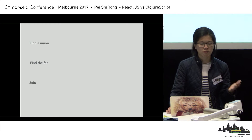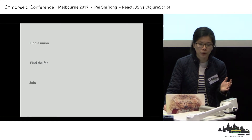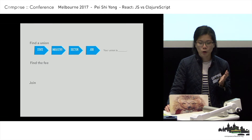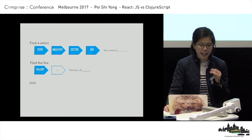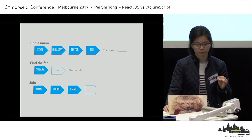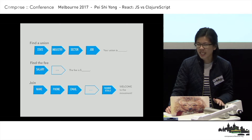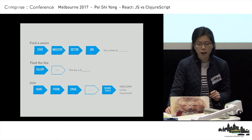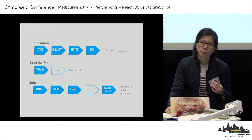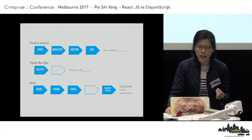It's a really simple frontend. Basically, there are three steps in joining a union: you find out what union you are in, you find out the fee, you fill out some web form, and then you're in. All of these are pretty standard, pretty easy UI stuff. But throughout the development process, me and my team had a few frustrations, especially with the frontend code.